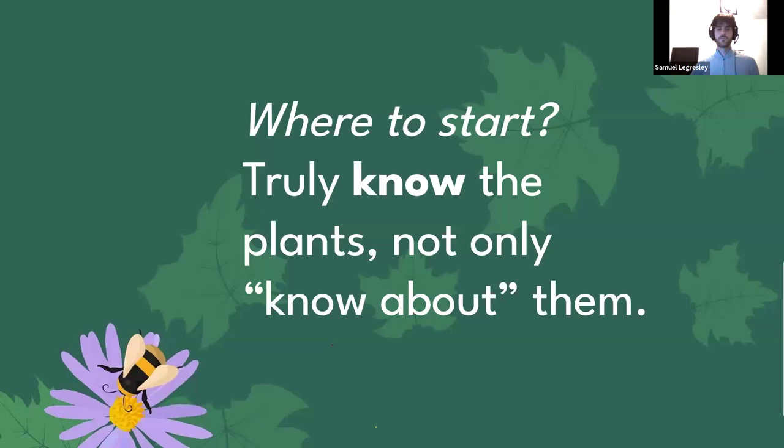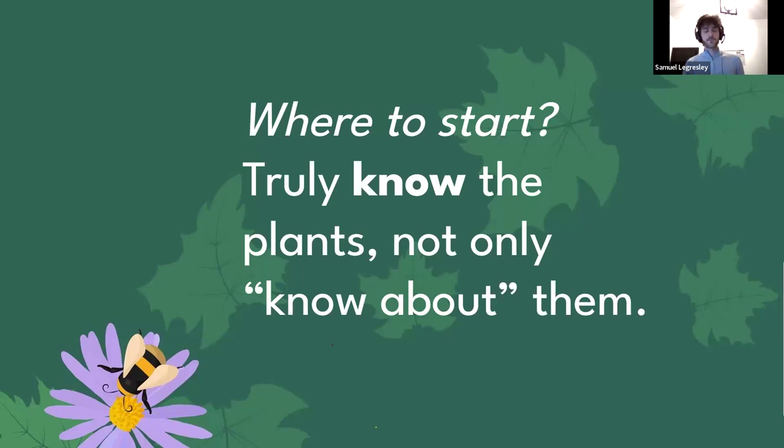You've got to truly know the plants, not only know about them. For example, if you look at a patch of trilliums, you'll know when one has four petals and is an exception from the rest — and that's how you truly know a plant species. You're not just knowing about them from a book, but you're really acquainted with the plant.